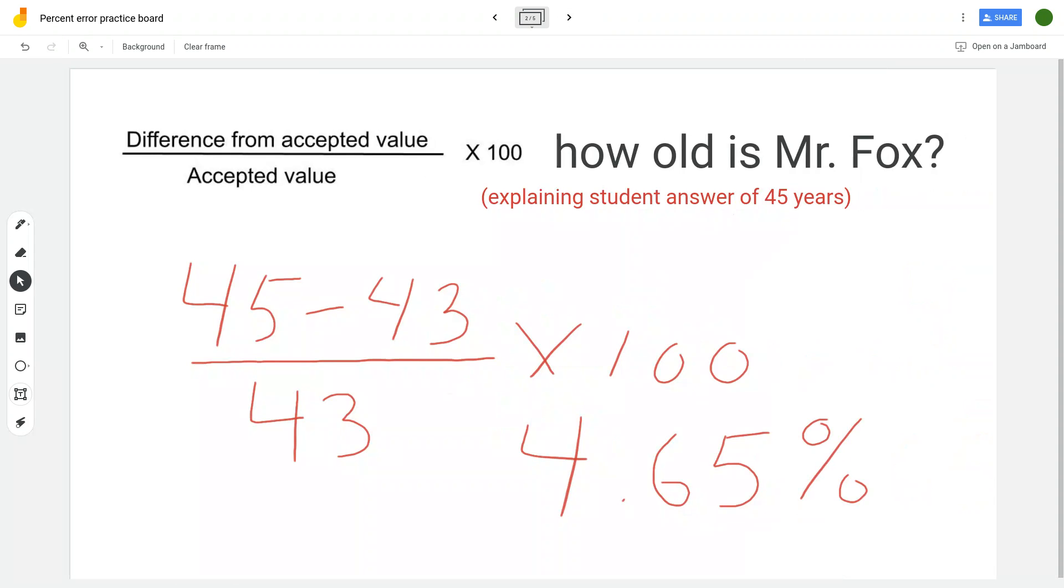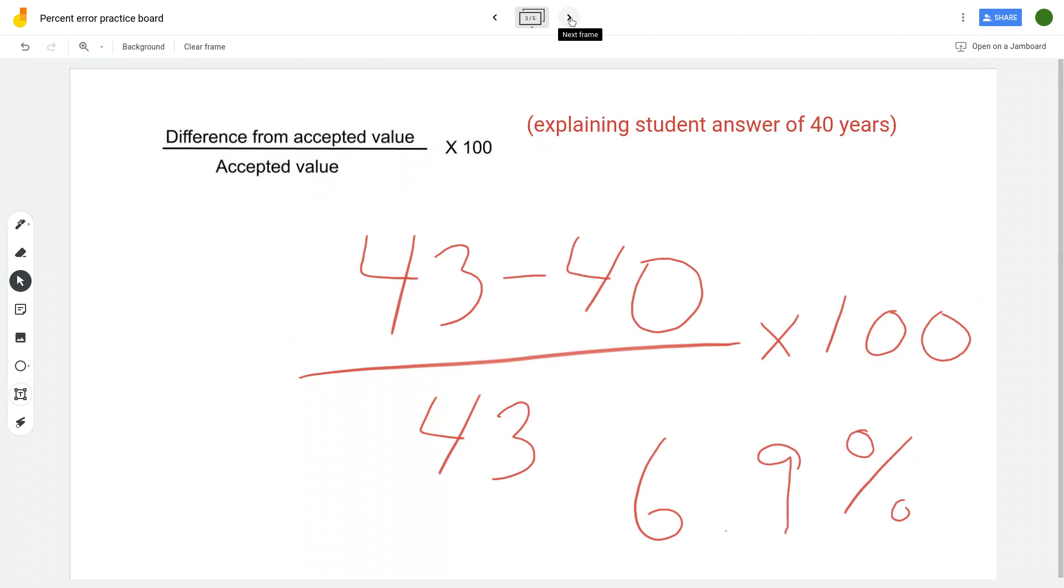All right, another example I got from a student, they said 40 years. All right, it's on the other side, it's lower than 43, so we've got to switch the numbers around in the numerator.